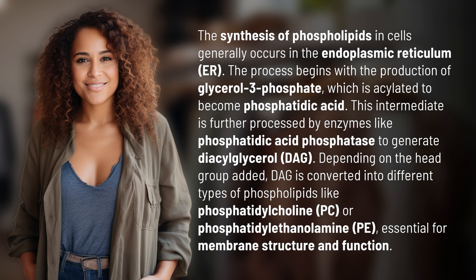The process begins with the production of glycerol-3-phosphate, which is acylated to become phosphatidic acid. This intermediate is further processed by enzymes like phosphatidic acid phosphatase to generate diacylglycerol, DAG.